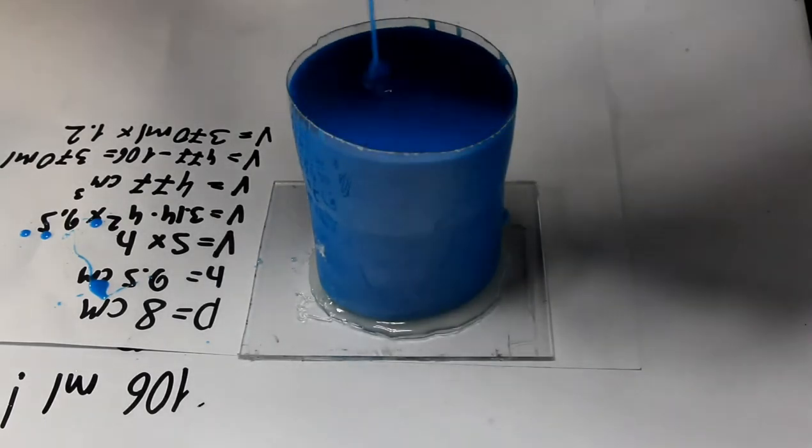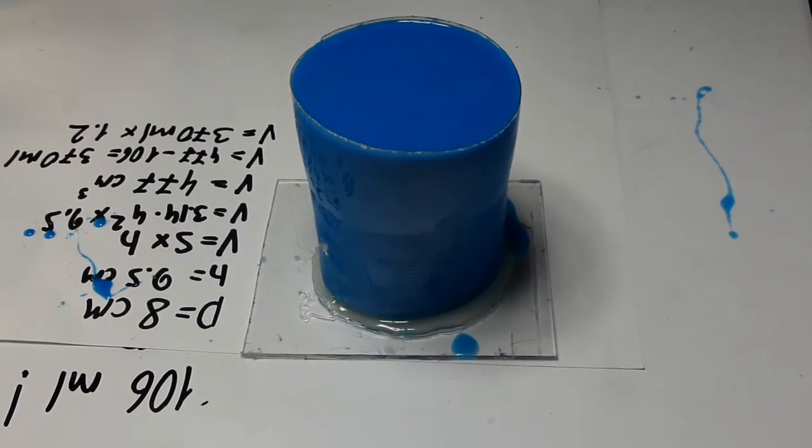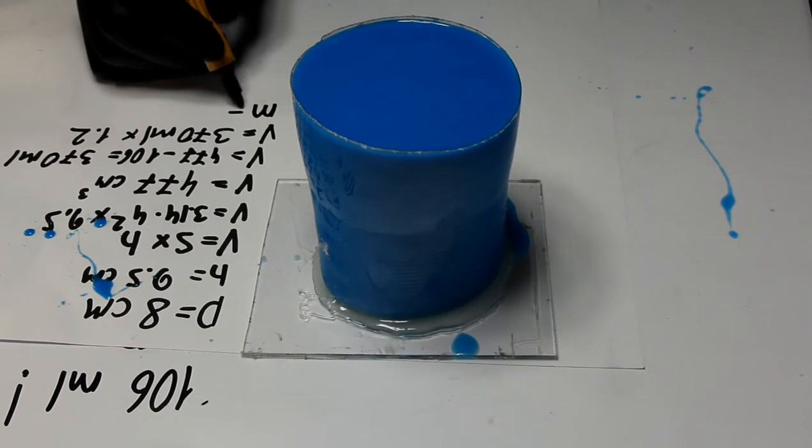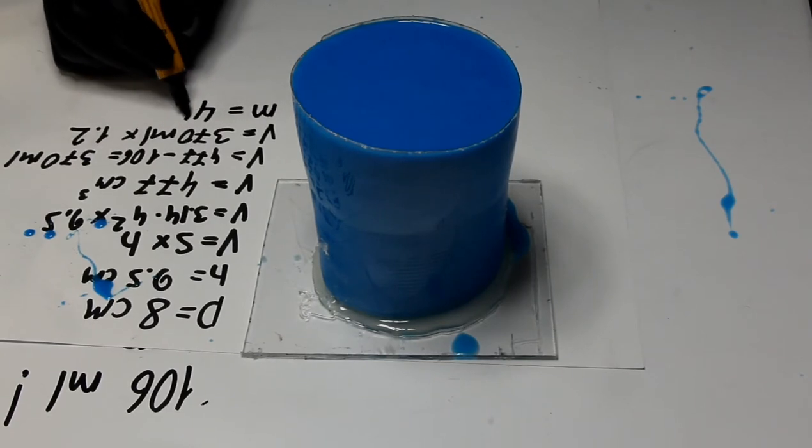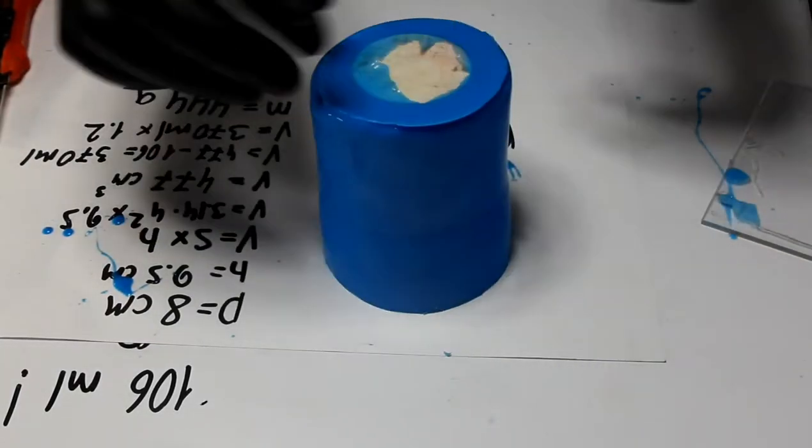Once we start silicone casting, we can use second hint. Certainly pour silicone with thin flow from high altitude in one point. Silicone must fill model by itself with air displacing. By doing this way, much better replication can be achieved.